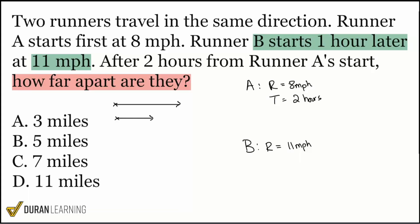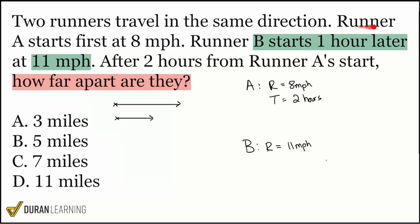But are we also going to put two hours for Runner B? No — that's wrong. Runner A starts first; Runner B starts one hour later. So if we're going two hours from when Runner A starts, that first hour is just Runner A alone, and then after the first hour Runner B starts. That means Runner B's time is not two hours — it is one hour.